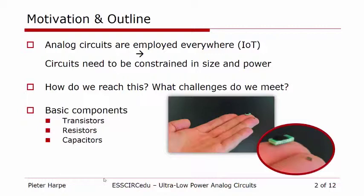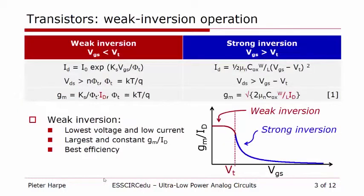The question now is how do we reach that, and what are especially the challenges that we face when we try to go there. Rather than showing you some circuit examples, I would like to go to the basics and discuss the basic components — transistors, resistors, and capacitors. Because if you know how to scale these to go to ultra-low power, then you also know how to build your circuits. So let me first start with transistors.